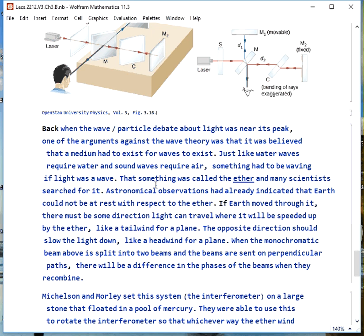The reason this was important when the wave particle debate about light was going on one of the things people said was if light is a wave what has to be waving there has to be something there in air for sound waves you have to have air waving for water waves we have to have water waving what was doing the waving if light was a wave and people postulated that that was something called the ether and a lot of scientists spent time looking for it. Through observations in astronomy, parallax and things like that people had figured out the earth can't be at rest with respect to the ether so if the earth is moving through it there has to be some direction we can travel where light will get us will be sped up like a tailwind behind a plane if we're traveling in the opposite direction it'll be like a headwind for the plane and the light will slow down.